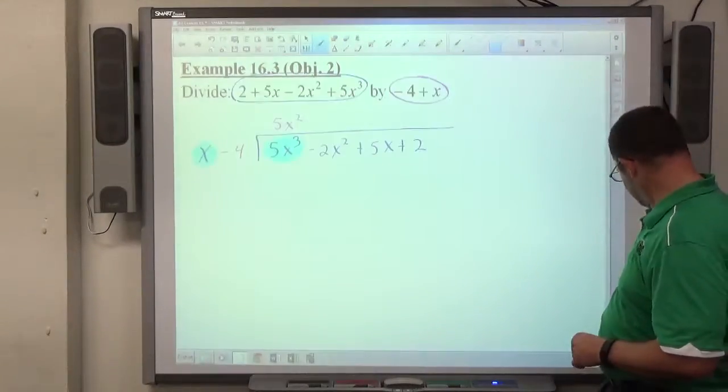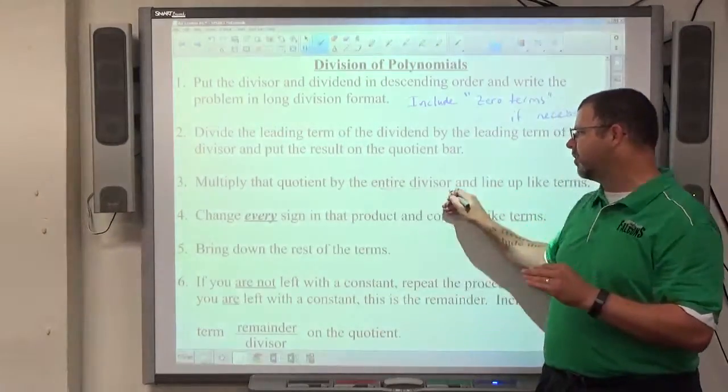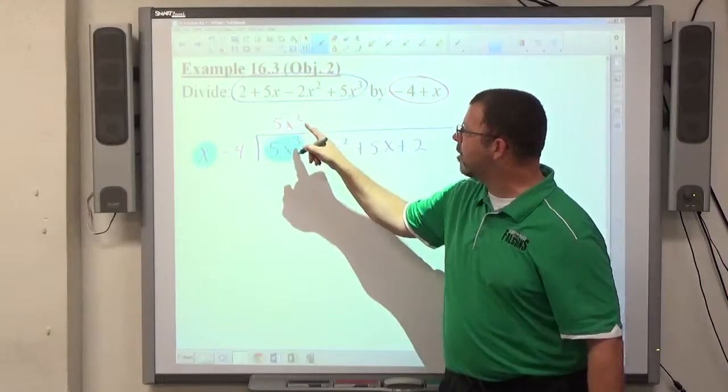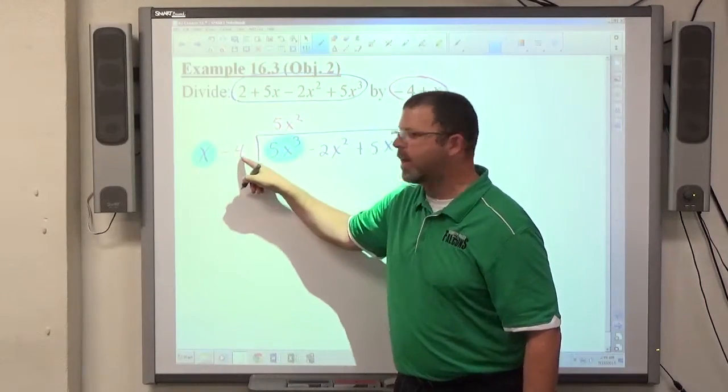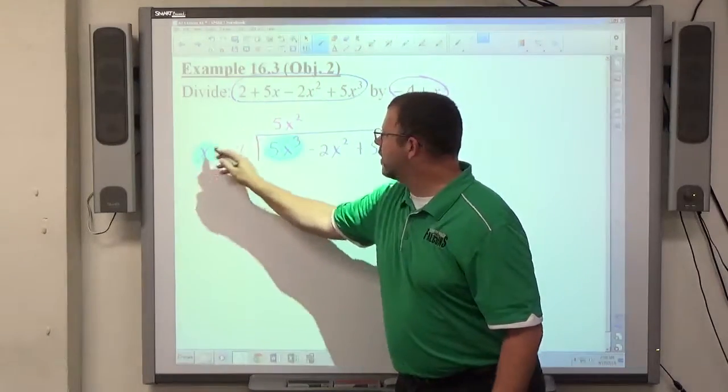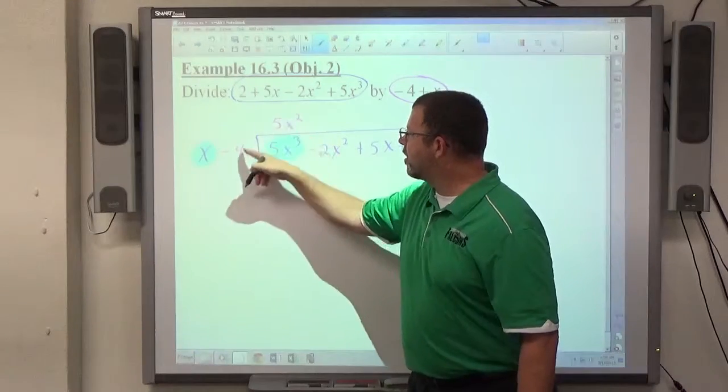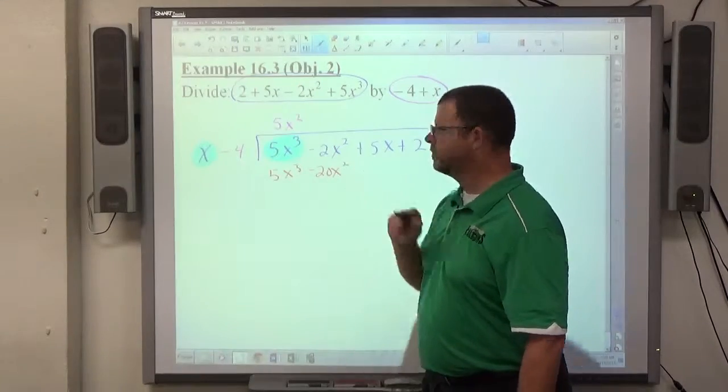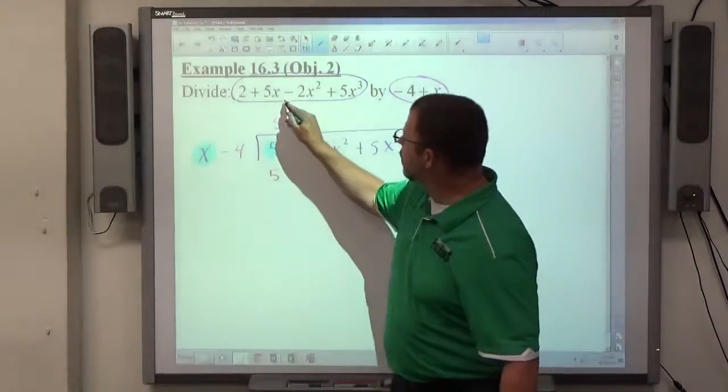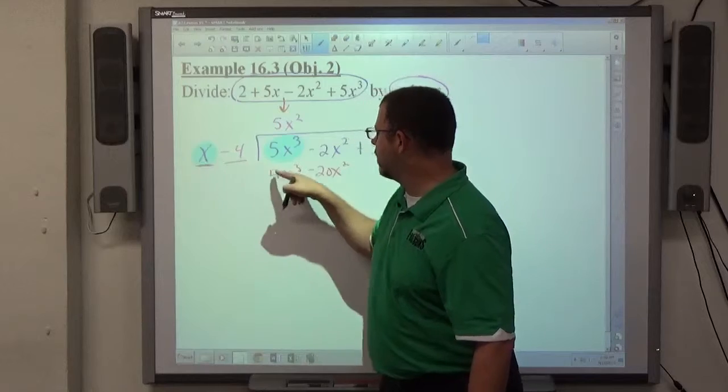Step 3. Multiply that quotient, the answer we just got, by the entire divisor. So I'm only dividing by x, but when I get the answer up here, I'm going to multiply this by x and negative 4. So I'm going to get two products down here. When I do 5x squared times x, I get 5x cubed. These should always match. When I do 5x squared times negative 4, I get negative 20x squared. So whatever the answer is that you get, multiply by the entire divisor, both pieces here. This and this, you get two products.